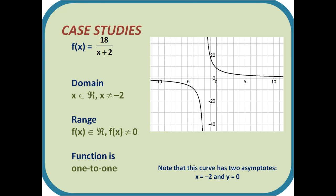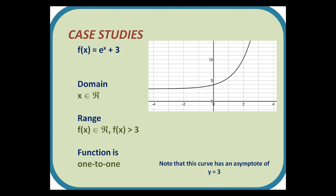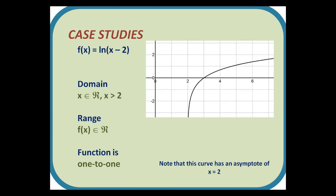f(x) = 18/(x + 2) has a domain of x ∈ ℝ, x ≠ −2, a range of f(x) ∈ ℝ with f(x) ≠ 0, and it is one-to-one. Note that this curve has two asymptotes: one at x = −2 and one at y = 0. f(x) = eˣ + 3 has a domain of x ∈ ℝ, a range of f(x) > 3, and it is one-to-one with an asymptote at y = 3. f(x) = ln(x − 2) has a domain of x ∈ ℝ, x > 2, a range of f(x) ∈ ℝ, and it is one-to-one with an asymptote at x = 2.